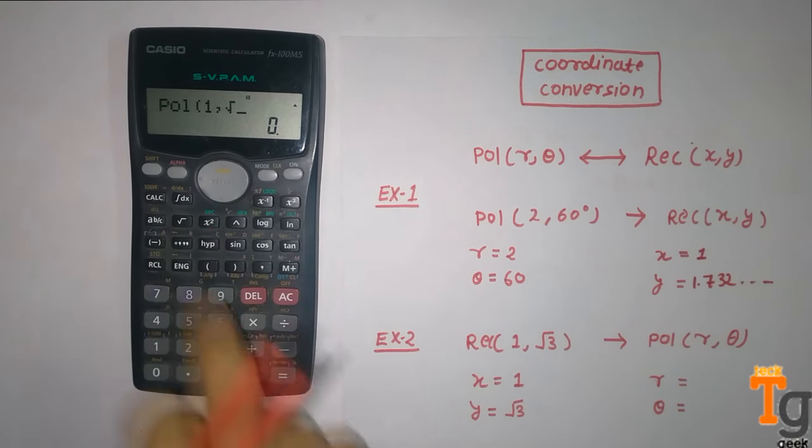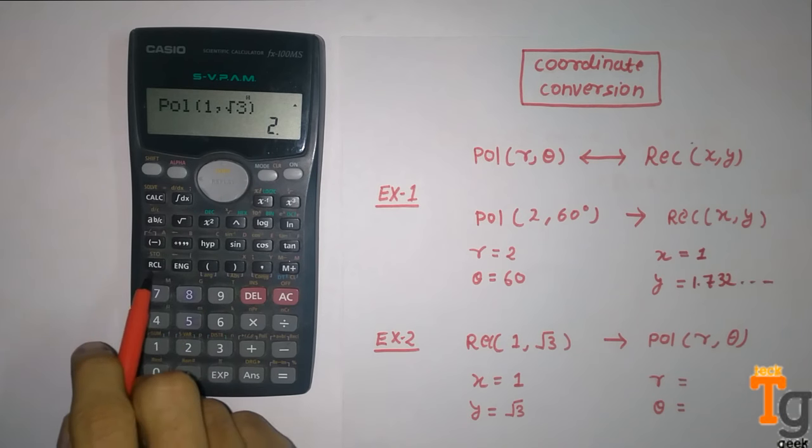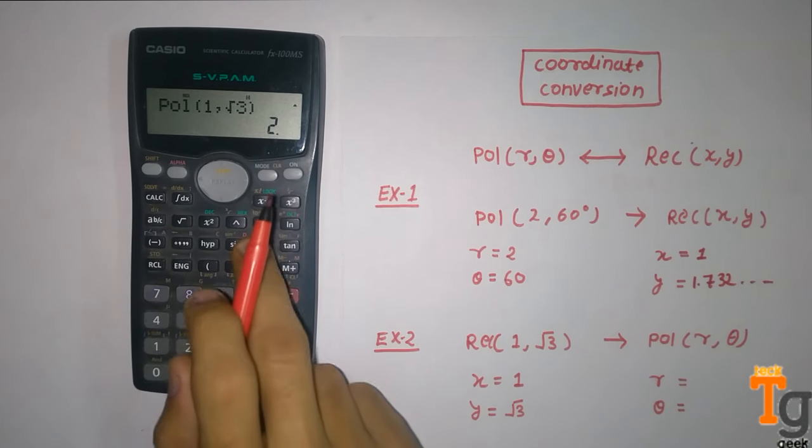Then we press equal. To get the value of r, we will simply press rtl and then e.